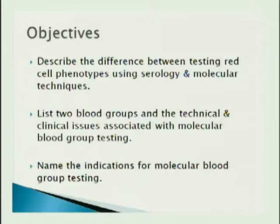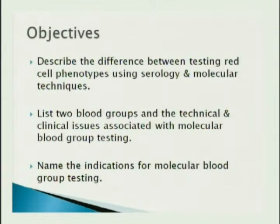The objectives for today's talk are to describe the differences between typing red cells using serology and molecular, to list two types of blood groups and the technical and clinical issues associated with typing them, and at the end we'll talk about the indications for molecular blood group typing.